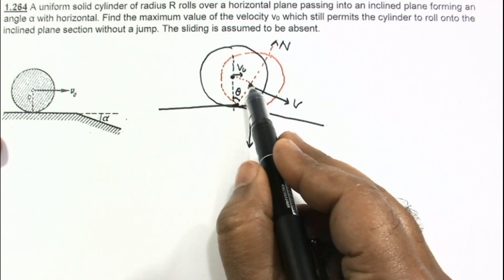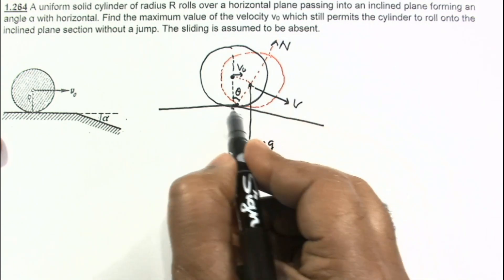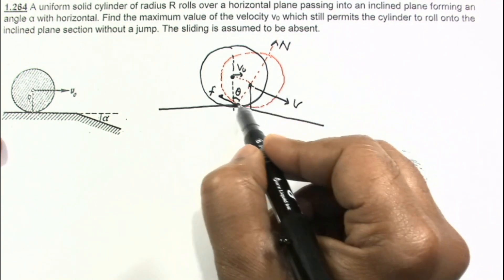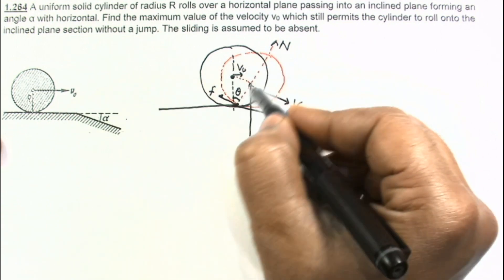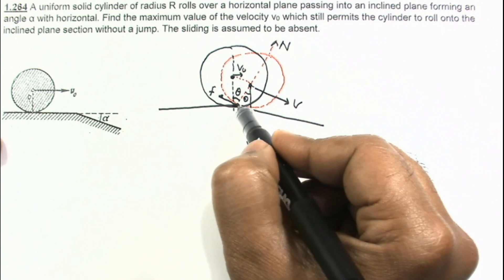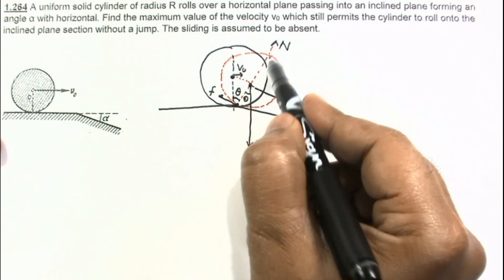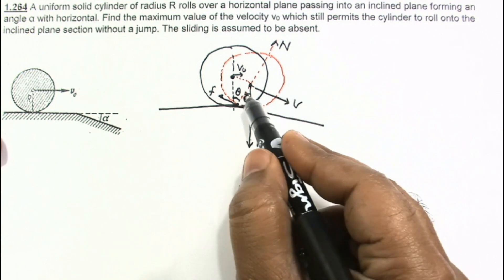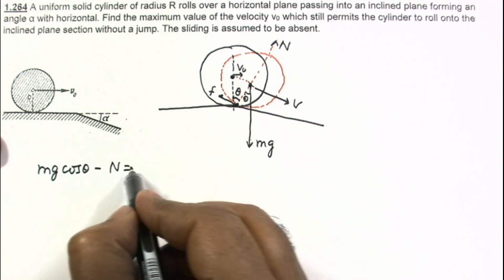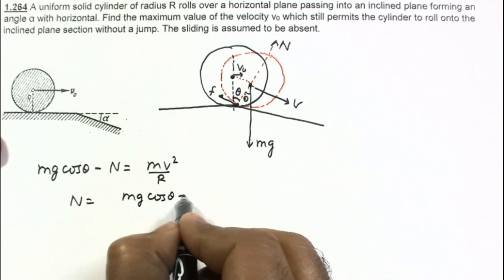Since the center is in pure rotation about this instantaneous contact point, there will also be friction acting in the tangential direction. The normal direction makes angle theta with the vertical. Since the center is performing pure rotation about this instantaneous point, we write the equation of circular motion along the normal direction. The component of mg along the normal direction is mg·cos(theta), so: mg·cos(theta) − N = mv²/R, giving N = mg·cos(theta) − mv²/R.